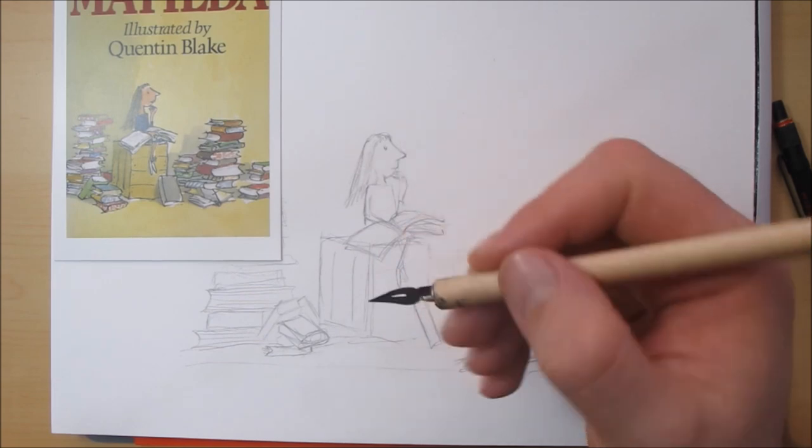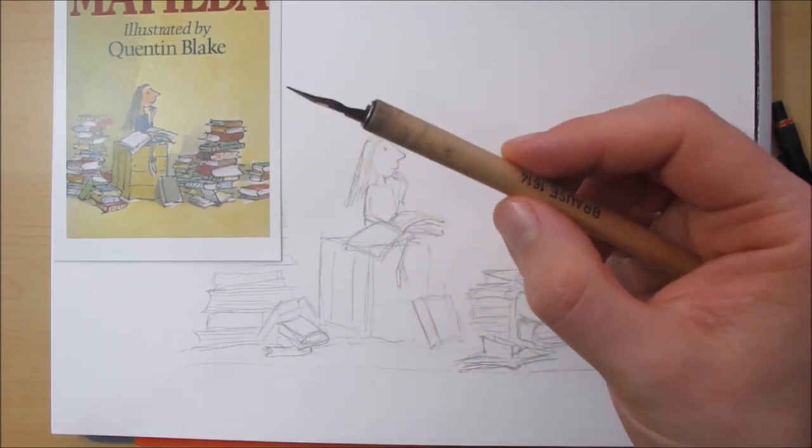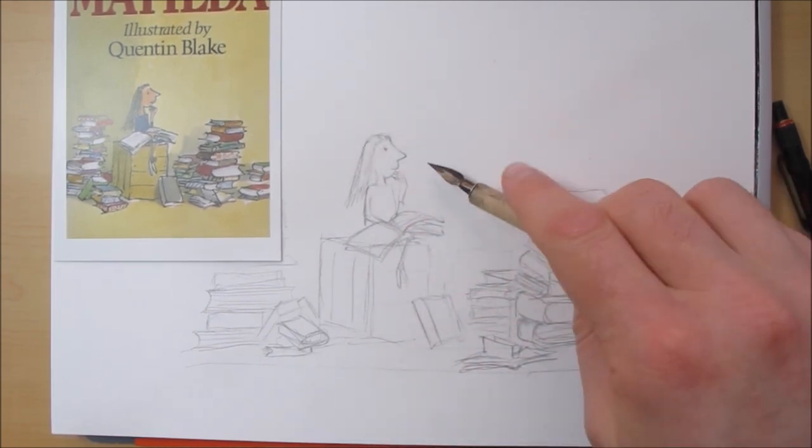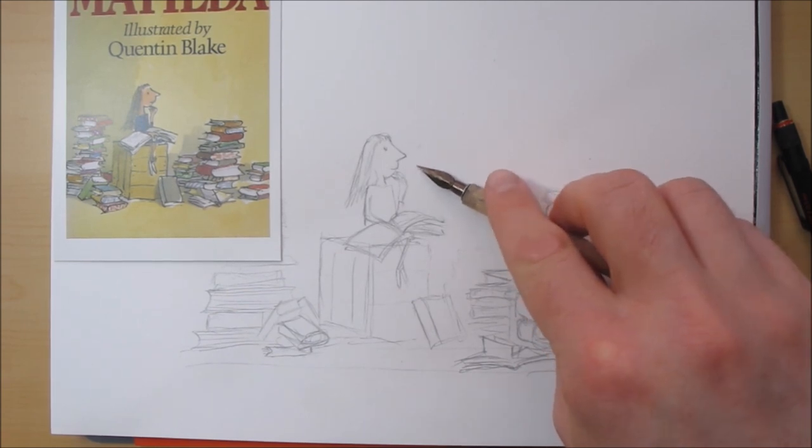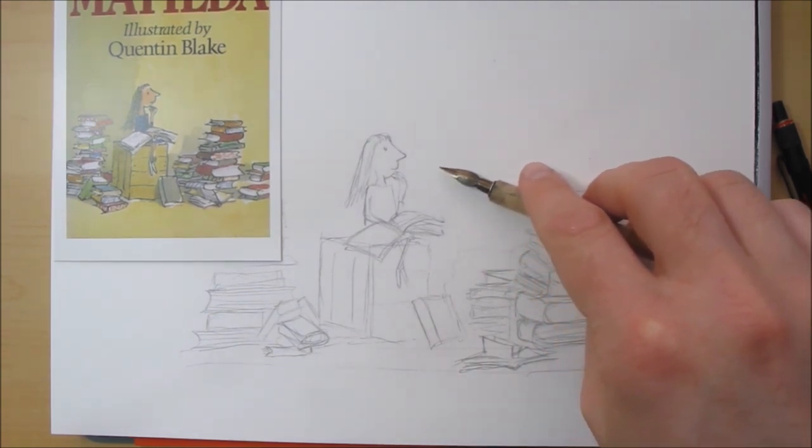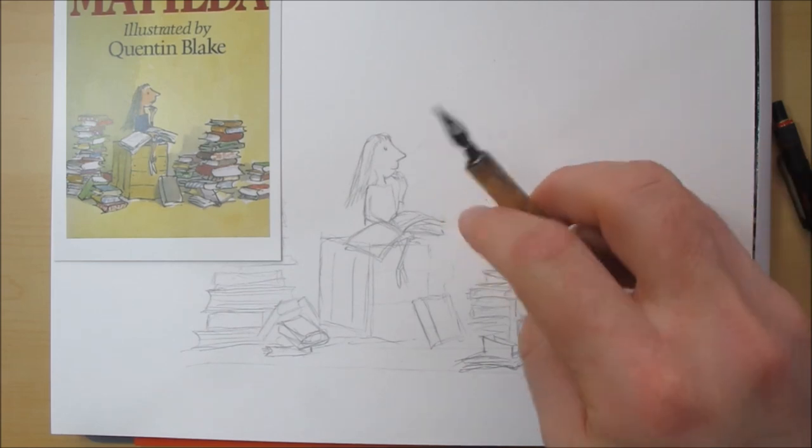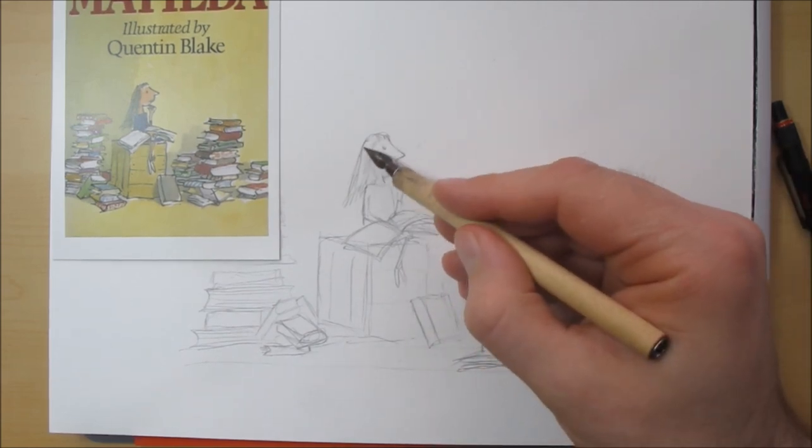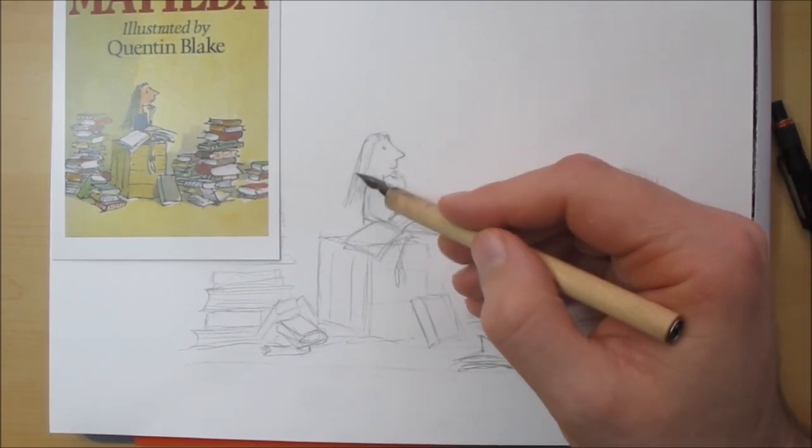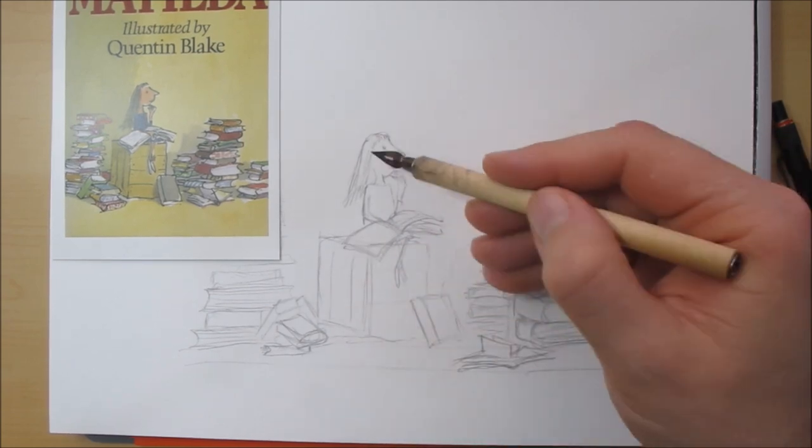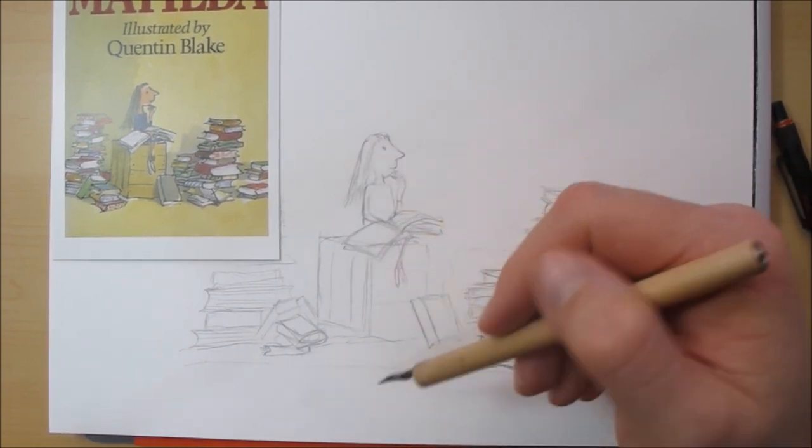So I'm going to start doing the inking now. And again, I'm using a dip pen for this. One of the reasons or one of the advantages of a dip pen is that with pressure, you can actually create a varied thickness to the line that you draw. And they're quite scratchy, a lot of people don't like using them. It's a kind of a love it or hate it kind of thing, really.